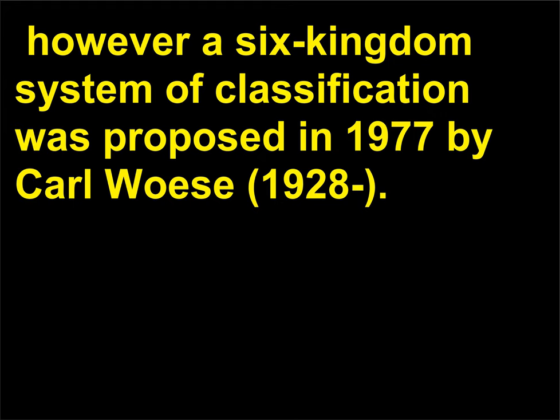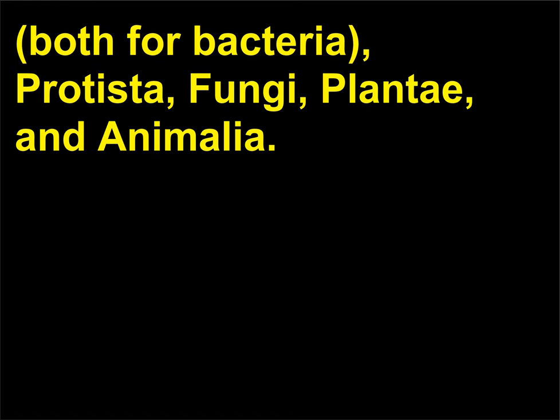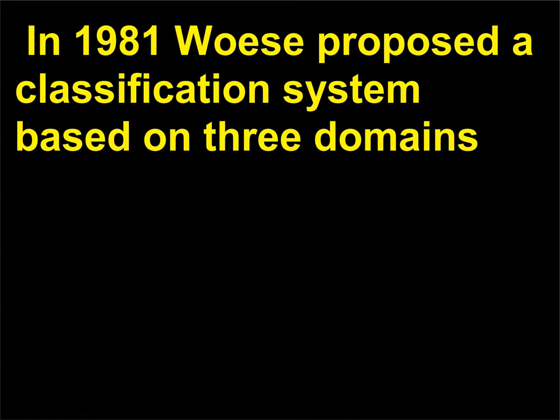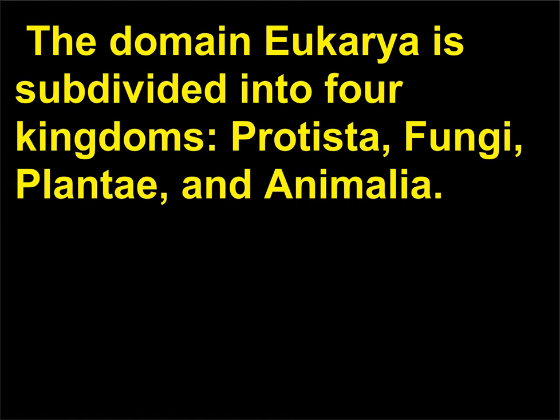However, a six-kingdom system of classification was proposed in 1977 by Carl Woese (1928). The groups proposed in the six-kingdom approach are Archaebacteria and Eubacteria (both for bacteria), Protista, Fungi, Plantae, and Animalia. In 1981, Woese proposed a classification system based on three domains—a level of classification higher than kingdom—Bacteria, Archaea, and Eukarya. The domain Eukarya is subdivided into four kingdoms: Protista, Fungi, Plantae, and Animalia.